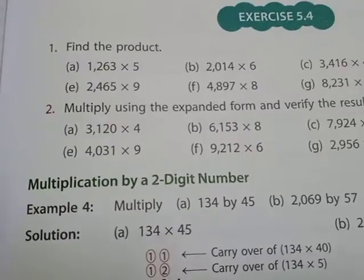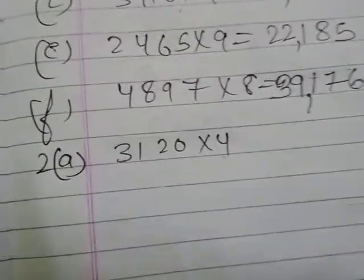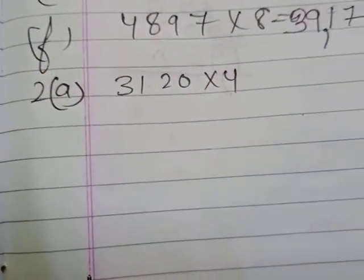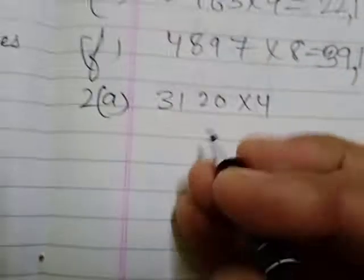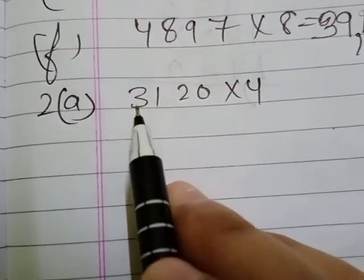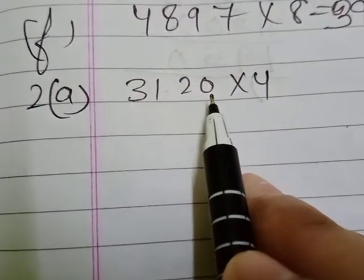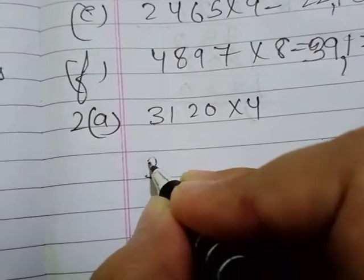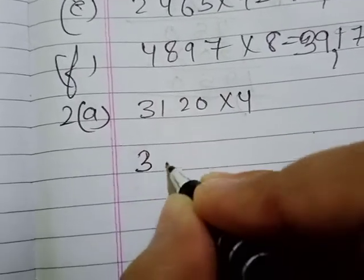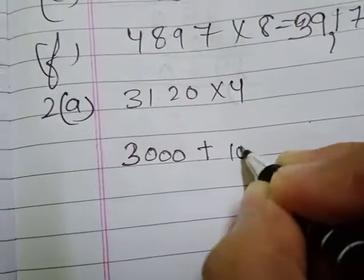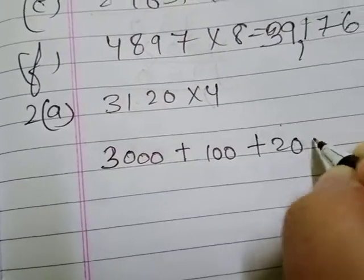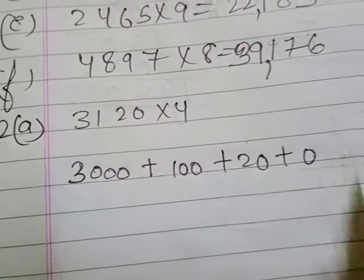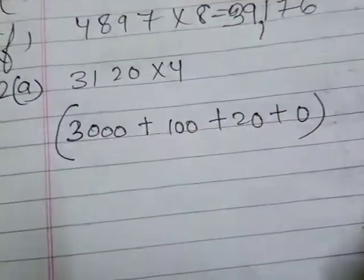Let me help you understand it carefully. We have 3120 multiplied by 4. First of all we will expand and multiply. Expand and multiply means the multiplicand which is given — we have to expand it. How to expand: 3000 plus 100 plus 20 plus 0. Like this we will expand the multiplicand.